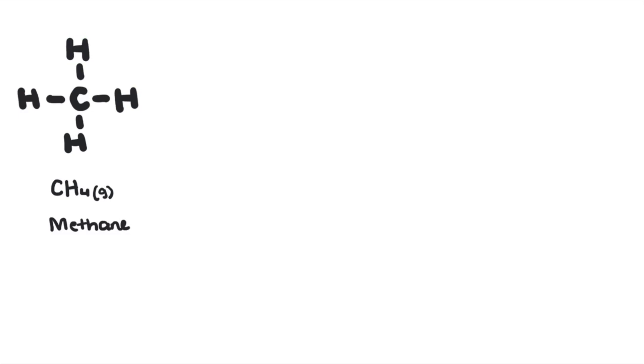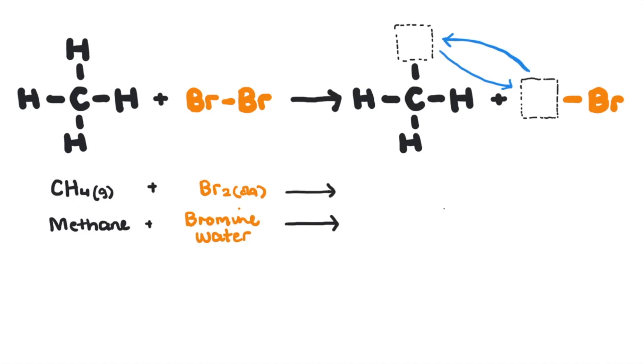So in methane, an unsaturated hydrocarbon, bromine in the form of bromine water, one of the atoms will substitute one of the hydrogens forming bromomethane. However, this reaction will only occur with copious amounts of UV light.